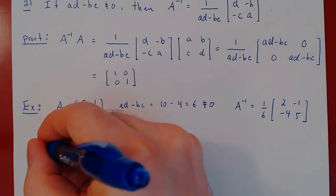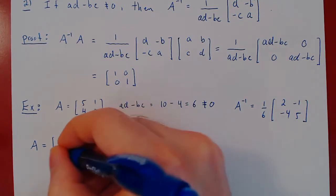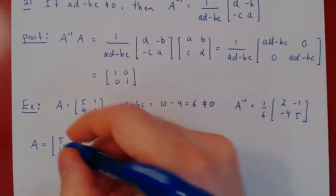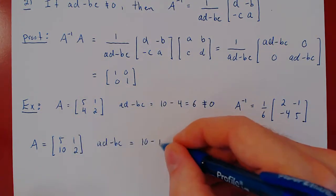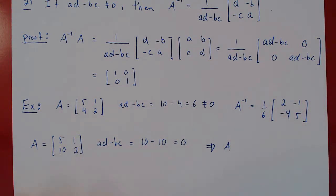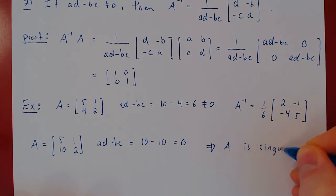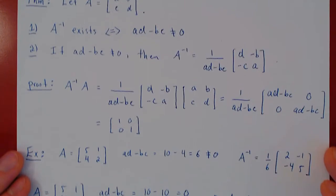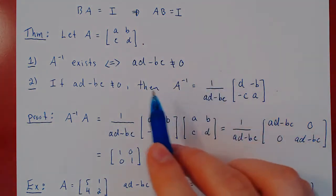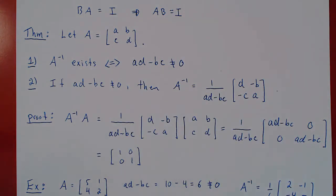One last example. What if A equals 5, 2, 10, 1? Is this matrix invertible or singular? Compute a·d minus b·c: 5 times 2 is 10, minus 10 times 1 is 10, which gives 0. Therefore this matrix is not invertible — we say it is singular, and the inverse of this matrix does not exist. For 2 by 2 matrices, this is the key result: compute a·d minus b·c to determine invertibility, and if invertible, use the formula to find the inverse. The topic of our next video will be how to find systematically the inverse of any square matrix.